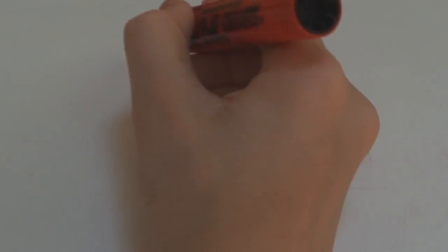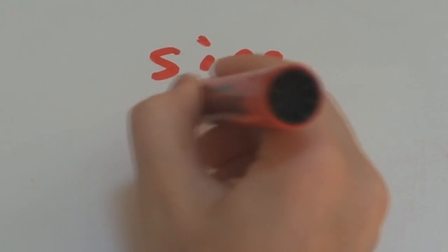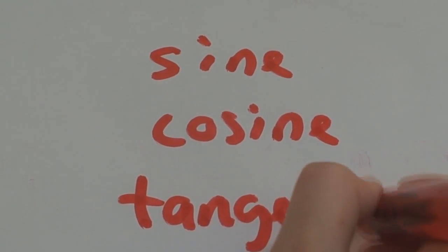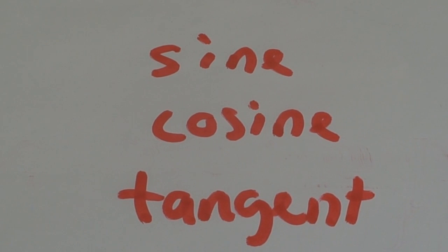Now, there are three mathematical terms that are related to these three sides. Sine, Cosine, and Tangent. Confused? I'll explain in the next part.